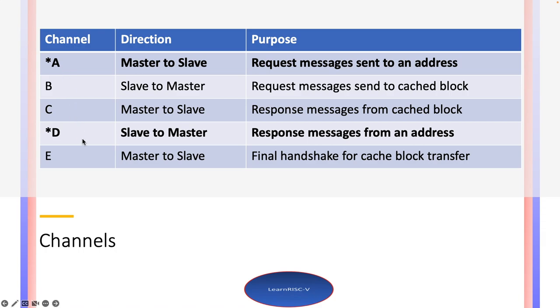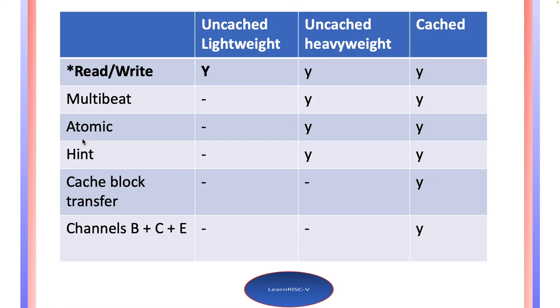Channels A and D are the ones used in Uncached Lightweight. If you see here, channels B, C, and E are used only for the highest conformance level, which is cached.